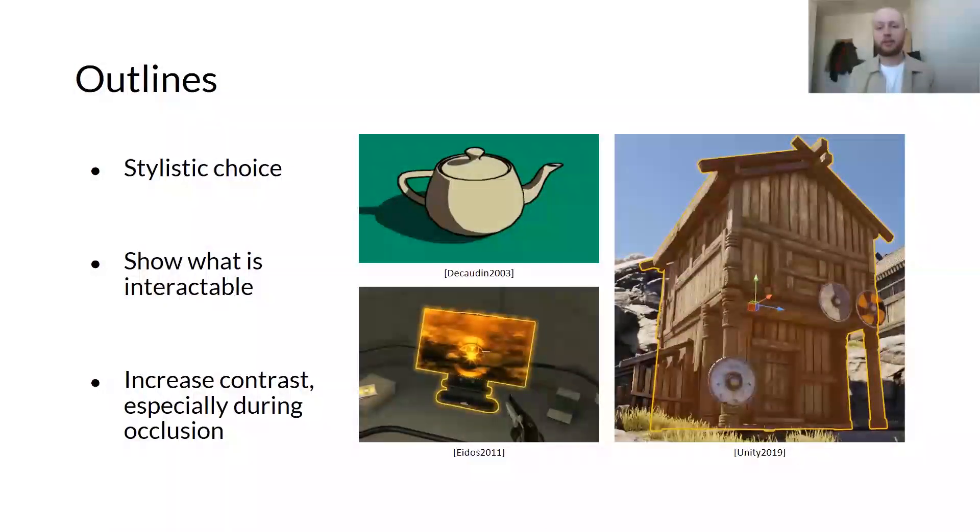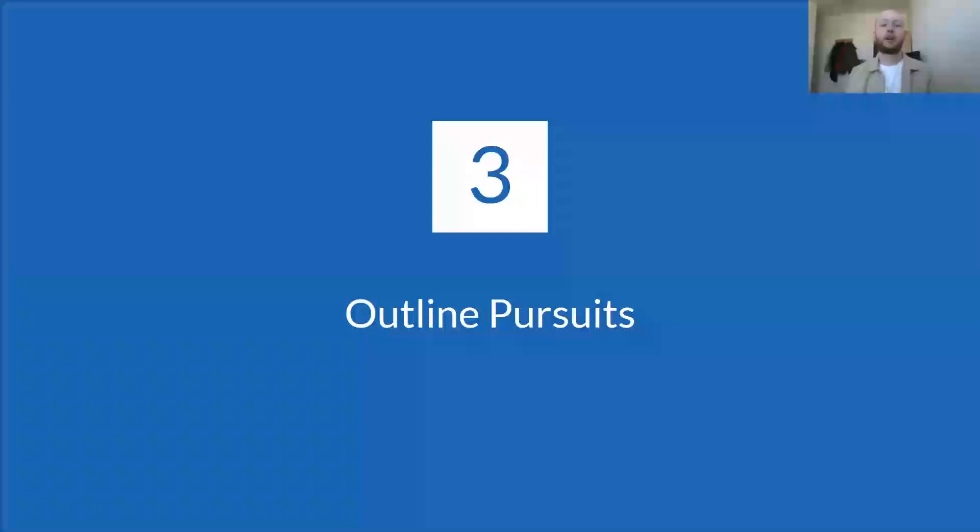Outlines have many utilities in virtual environments. They are used to show objects that are interactive, or to highlight the current selection, and also as an accessibility tool to increase the visual contrast between objects. We add to the utility of outlines by augmenting them with motions for smooth pursuit interaction. With that being said, Chris is now going to break down the outline pursuits and the steps of interaction.